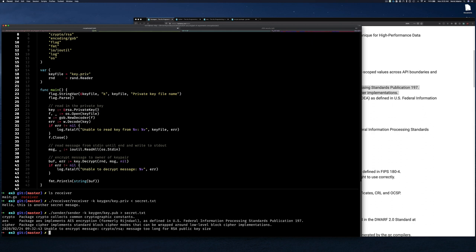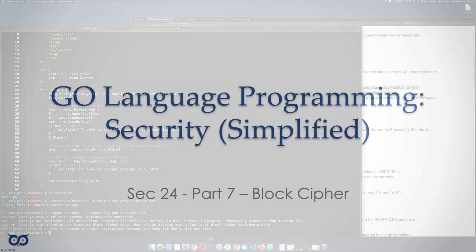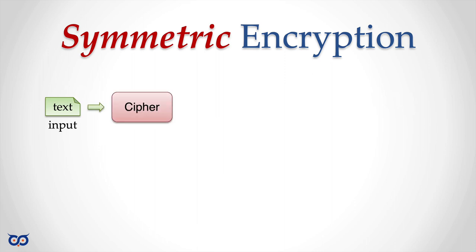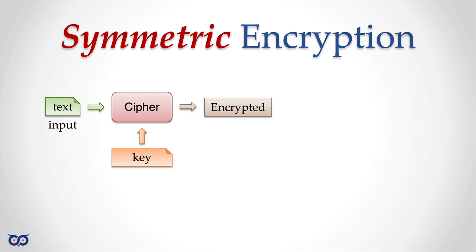For that we need to refresh our memory about the differences between asymmetric and symmetric encryption. When we do symmetric encryption, we have some text as input, we feed it to a cipher along with a key, and we get cipher output. That cipher output can then be fed into the same cipher on the receiving end.